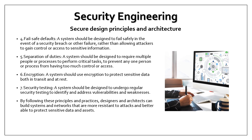Four, fail-safe defaults — a system should be designed to fail safely in the event of a security breach or other failure, rather than allowing attackers to gain control or access to sensitive information. Five, separation of duties — a system should be designed to require multiple people or processes to perform critical tasks, to prevent any one person or process from having too much control or access. Six, encryption — a system should use encryption to protect sensitive data both in transit and at rest.